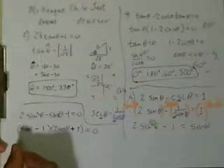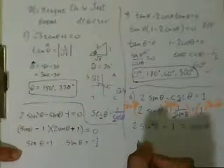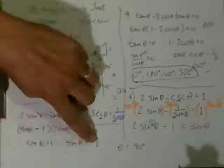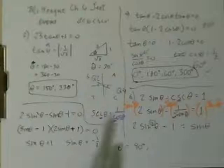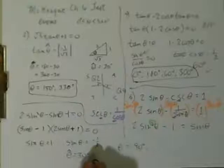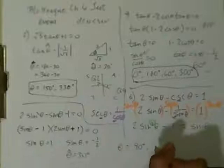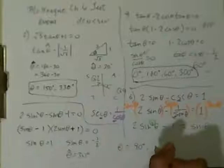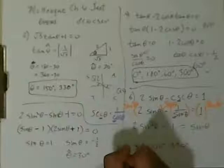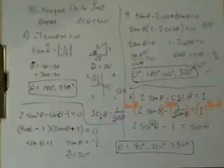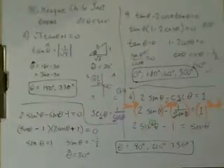We zip it out and set each factor equal to 0. Sine theta equals 1, and sine theta equals negative 1/2. For sine theta equals 1, theta equals 90 degrees. For sine theta equals negative 1/2, the reference angle is 30 degrees, and sine is negative in quadrant 3 and quadrant 4. So 180 plus 30 is 210 degrees, and 360 minus 30 is 330 degrees. Checking number 6: 90, 210, and 330. Perfect, that's right.